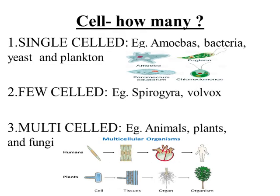Now we are going to study organisms on the basis of the number of cells. As we all know, the bigger an organism, the greater is the number of cells in its body. On the basis of number of cells, organisms are categorized into three categories: single-celled organisms, few-celled organisms, and multi-celled organisms.